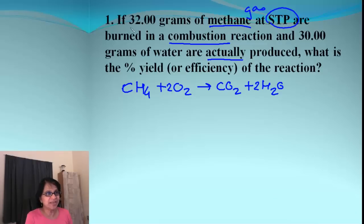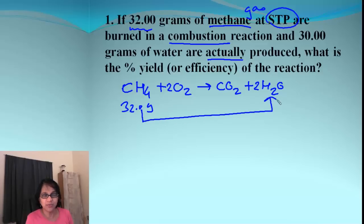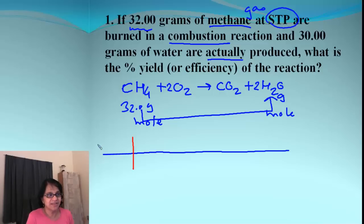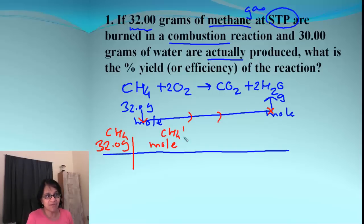Our roadmap: the beginning point is 32 grams of methane and our destination is water. From grams we go to moles of methane, then to moles of water via the mole bridge, and then from moles of water to grams of water. Let's set up our grid and begin with the given: 32.0 grams of CH₄.